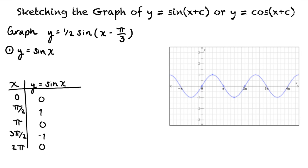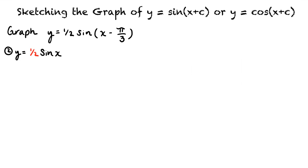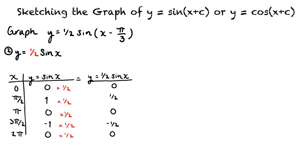Correct. Let's plot the graph for y equals one-half sine of x. How will we find the points for this graph? To do this, we'll multiply the y-coordinates of the points of the previous graph by one-half. This results in 0, one-half, 0, negative one-half, and 0.